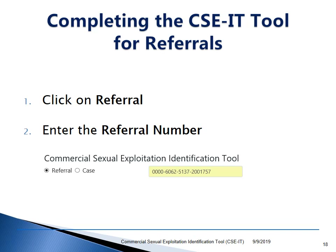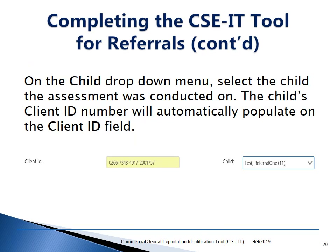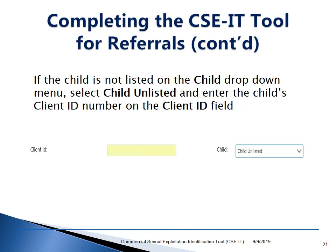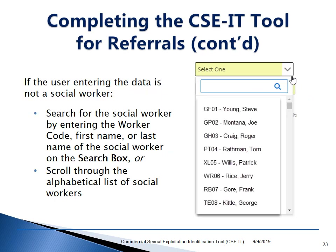Completing the SEE-IT tool for Emergency Response Referrals. To enter screening results for a referral, click on Referral and enter the referral number. Click on the calendar icon on the assessment date and select the date the social worker completed the assessment, not the date of entry into the database. On the child drop-down menu, select the child the assessment was conducted on. The child's client ID number will automatically populate on the client ID field. If the child is not listed, select Child Unlisted and enter the client ID number. If the user is a social worker, the field will auto-populate; otherwise, search by worker code, first name, or last name, or scroll through the alphabetical list.